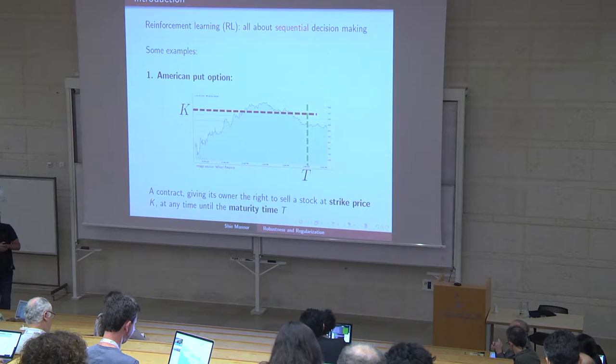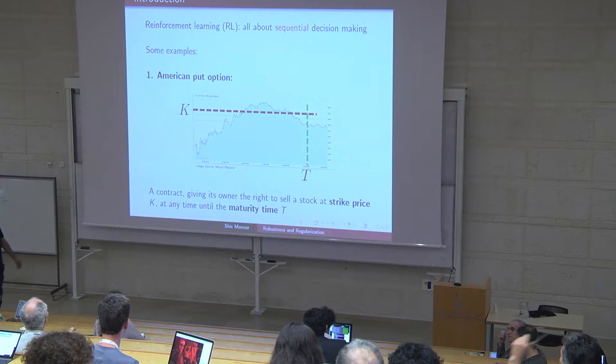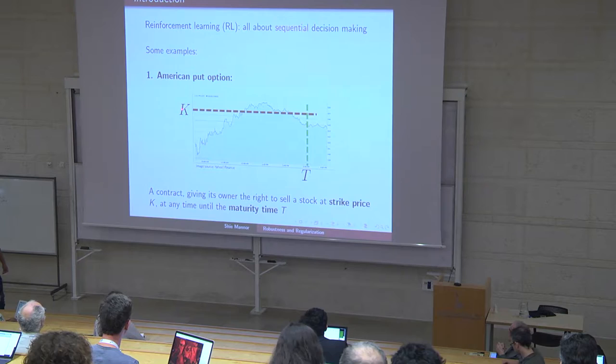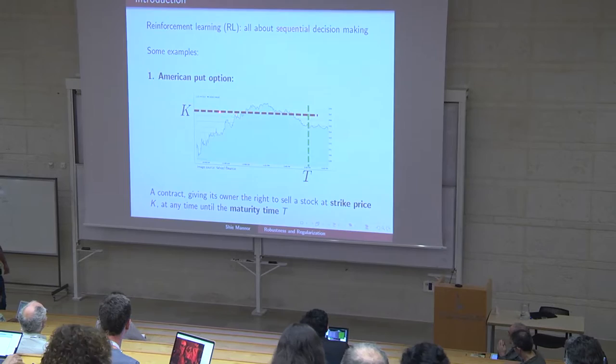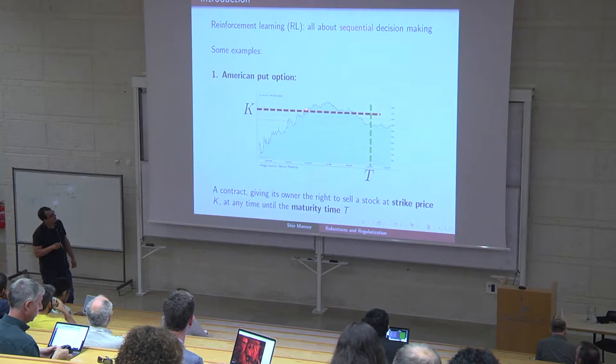I'm going to give you a couple of examples. The first one is American Put Options — perhaps the most common option. There is an expiring time T, there is an execution price K, and you need to decide if the price is going to go above or below the red line. If it goes above and you execute the option, you make money. However, if you wait until it touches the red line and then execute, you make essentially zero dollars.